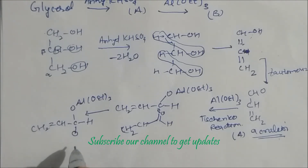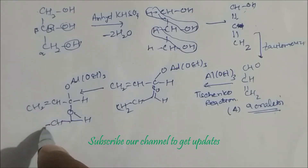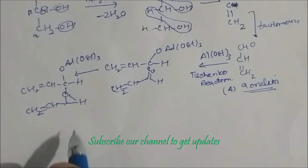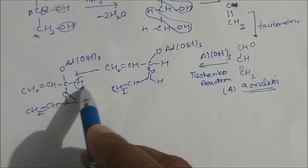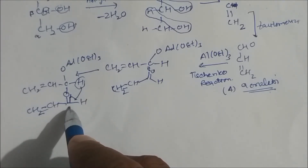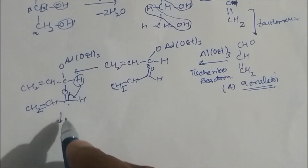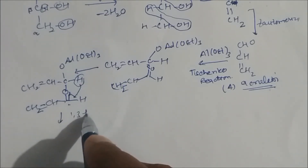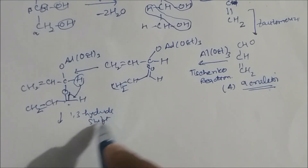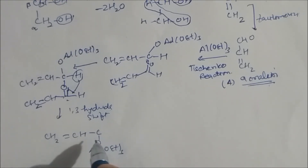We get a compound with CH₂=CH on both sides and an oxygen linkage. In this intermediate, a hydride shifts — specifically a 1,3-hydride shift occurs. On this shift, the carbon becomes CH₂, so the hydride moves over to give the next compound: CH₂=CH on one side with the oxygen framework rearranged.